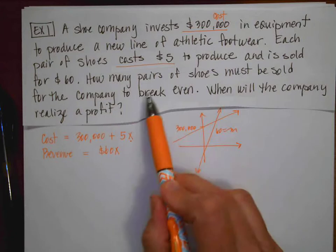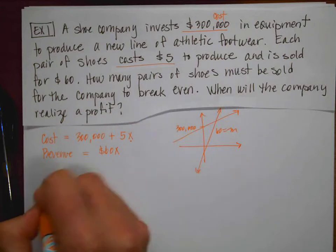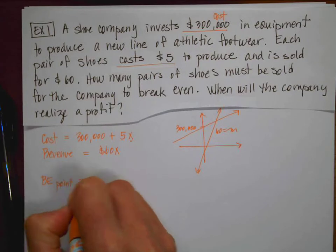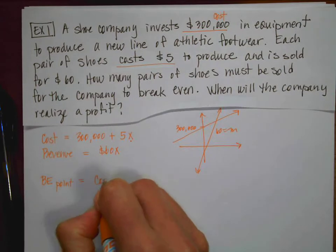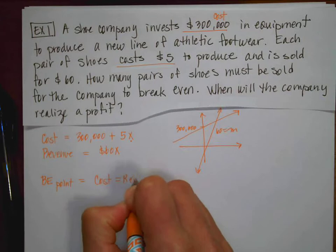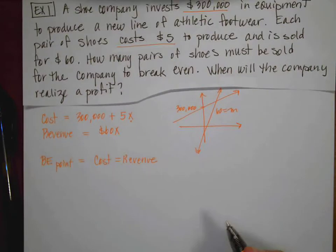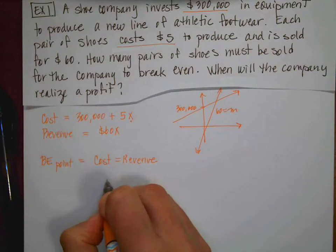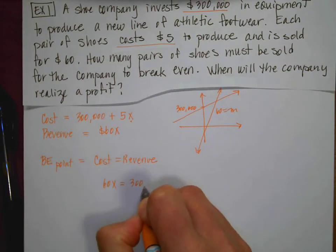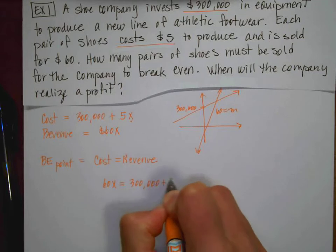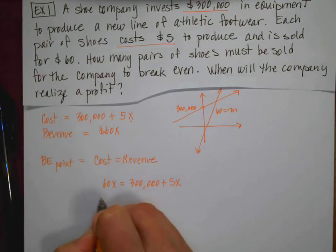So I want to know, the first question is, how many pairs of shoes to break even? So for the break even point, that is going to be where the cost is equal to the revenue. So I'm going to set the two equations equal and I'm going to solve. So I have 60x is going to equal $300,000 plus 5x.